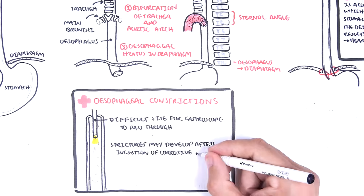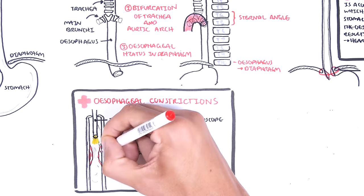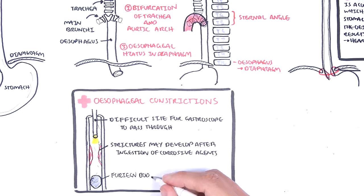Strictures may develop after ingestion of corrosive agents. And lastly, foreign bodies may get stuck in these locations.